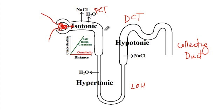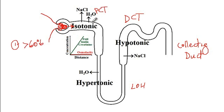A key point regarding the proximal convoluted tubule is that more than 60 percent of water reabsorption along the renal tubules occurs here. So even if you combine the water reabsorption from all other segments, they wouldn't be close to what is being absorbed in the proximal convoluted tubule.